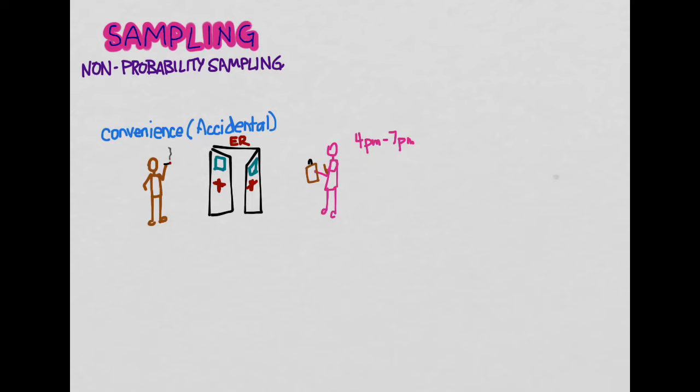And so there could be unrecognized factors, unrecognized confounding factors with these convenience samples. But we do them because it's convenient for us.